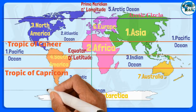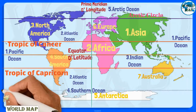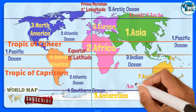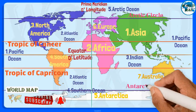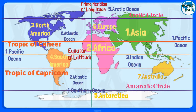Antarctic Circle. The Antarctic Circle is the most southerly of the five major circles of latitude that mark maps of Earth. The region south of the circle is known as the Antarctic, and the zone immediately to the north is called the Southern Temperate Zone.